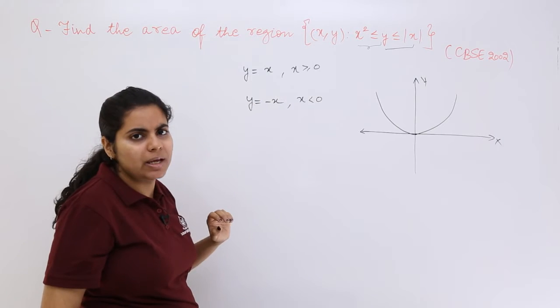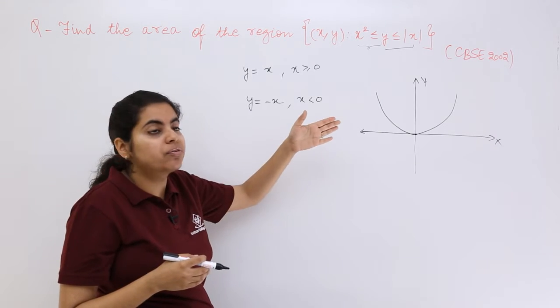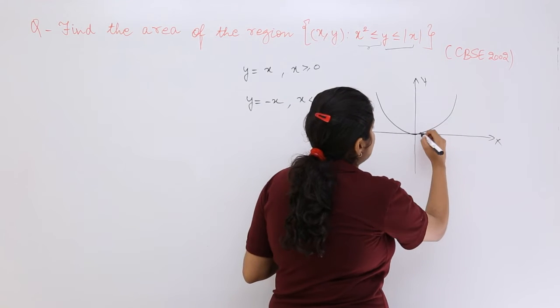What about y = x? How do we draw this y = x? At an angle of θ = 45°, the slope will be 1 and it will be drawn this side.